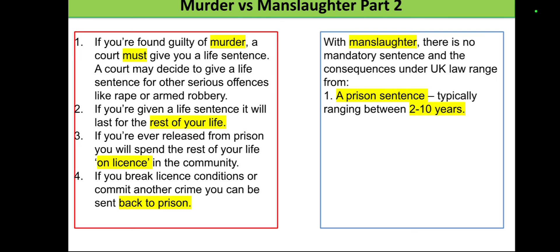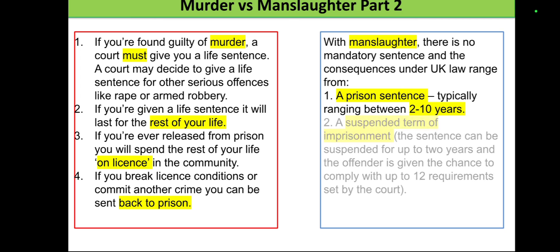One option is a prison sentence. Normal prison sentences last from two to ten years, though they can go up to life depending on the situation. This is why manslaughter is a better conviction to be tried for than murder — because the results are so varied.